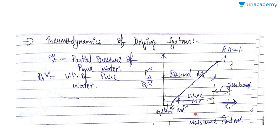Free moisture content is the moisture content that is in excess of the equilibrium moisture content. Unbound moisture content is whatever is present on the surface of the solid and is free to vaporize. Bound moisture content includes both free moisture content as well as equilibrium moisture content, but only free moisture content can be removed, whereas equilibrium moisture content cannot be removed.